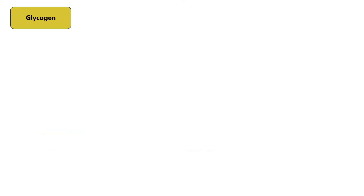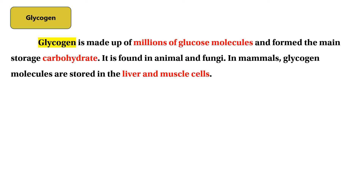Now let's talk about glycogen. Glycogen is made out of millions of glucose molecules. Glycogen forms the main storage carbohydrate in animals.